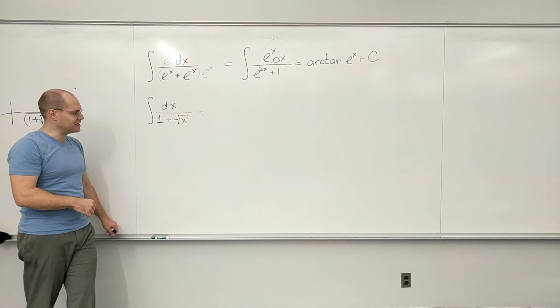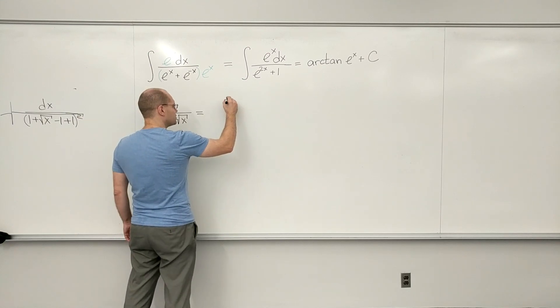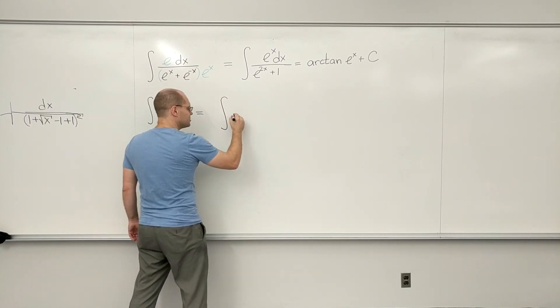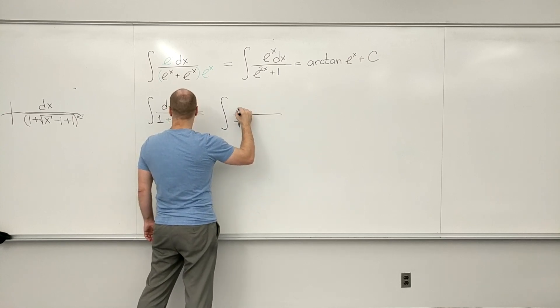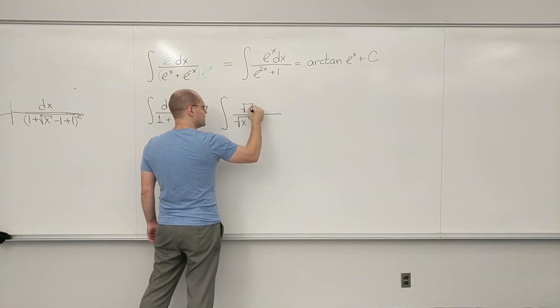So what I'm suggesting is to divide by square root of X and to make up for it, multiply by square root of X.